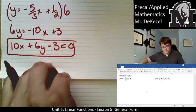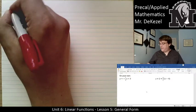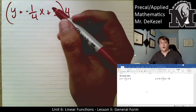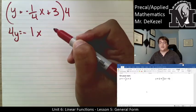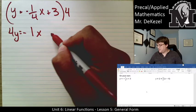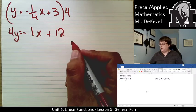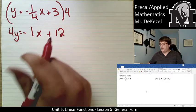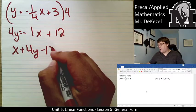Try-it solution one: y = -1/4x + 3. Multiply everything by 4: 4y = -x + 12. Move everything to the left — bring the x over as positive: x + 4y - 12 = 0. That is the general form for the first try-it problem.